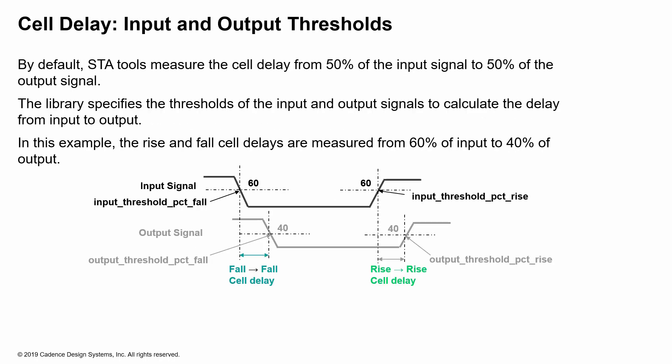The propagation delays are measured from when the input threshold fall percentage point to the output threshold percentage point. So if 50% of the input signal change has happened to 50% of the output signal change has happened, then that could be considered as the cell delay. If you look at the libraries, these input threshold percentages and output threshold percentages are given for both rise and fall. So therefore, depending on what the input signal is doing and what the output signal is doing, we measure the delay from the input signal to the output signal based on these percentage thresholds.